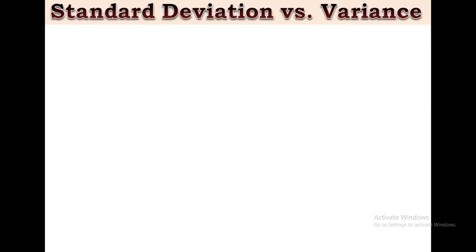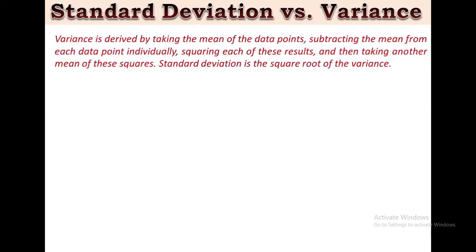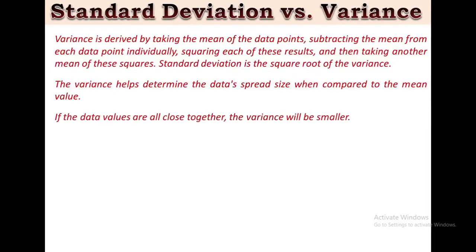Standard deviation versus variance: Variance is derived by taking the mean of data points, subtracting the mean from each data point individually, squaring each result, and then taking another mean of these squares. Standard deviation is the square root of the variance. The variance helps determine the data spread size when compared to mean value. As variance gets bigger, more variation in data values occurs and there may be a larger gap between one data value and another. If data values are all close together, the variance will be smaller. However, this is more difficult to grasp because variance represents a squared result that may not be meaningfully expressed on the same graph as the original data set.